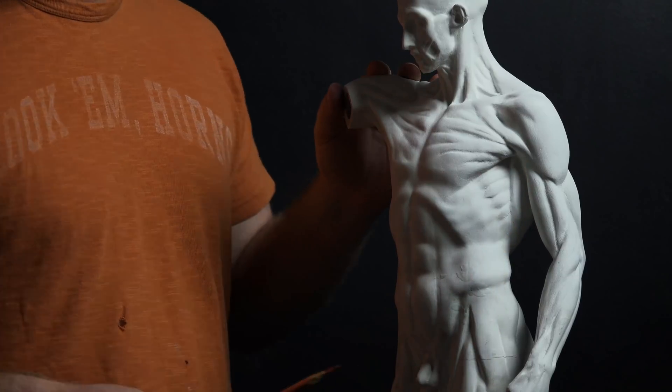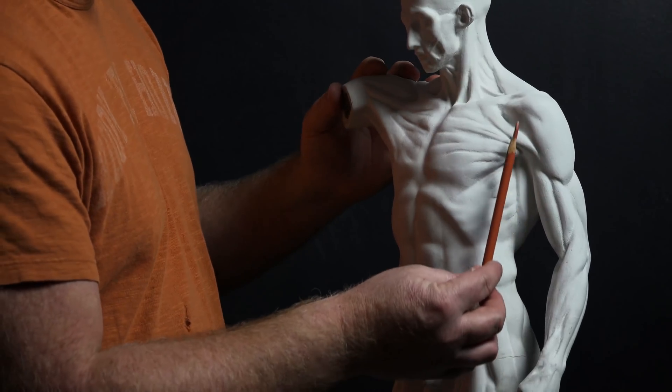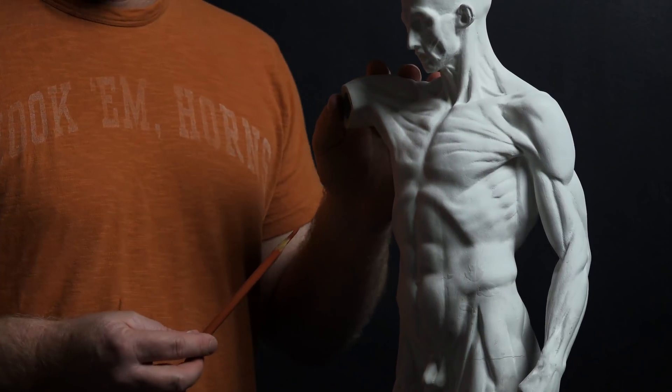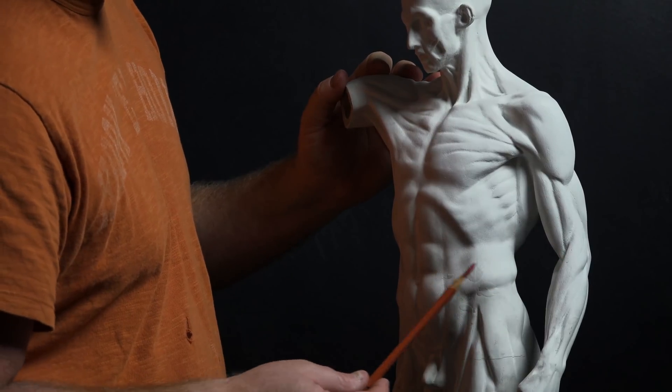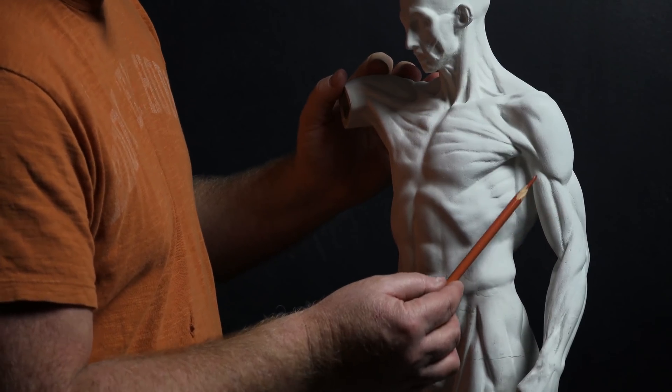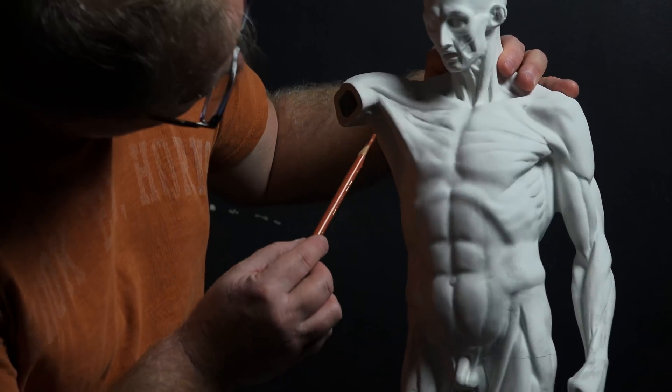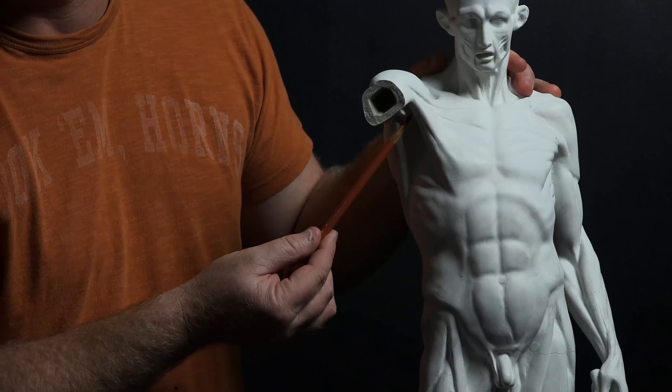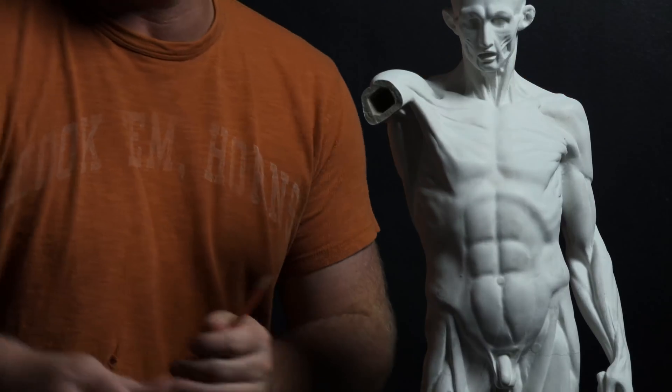It attaches all the way up to the coracoid process and then all the way through the intertubercular sulcus, in that little groove we've seen on the humerus and up to the top of the glenoid cavity through there, and then down on the brachialis on the ulna side and then on the radial side into the radial tuberosity. So brachialis, biceps, brachialis.